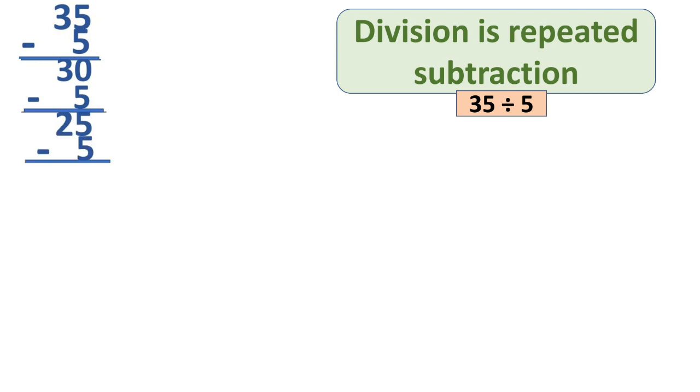Division is actually repeated subtraction. Let's see how we can divide 35 by 5. Let's minus 5 every time until we get 0 from the number 35. 35 minus 5 is equal to 30. Now, again, we will minus 5. We will minus the same number because we have to divide 35 by 5. 30 minus 5 is equal to 25. 25 minus 5 is equal to 20. 20 minus 5 is equal to 15. 15 minus 5 is equal to 10. 10 minus 5 is equal to 5. 5 minus 5 is equal to 0. If we get 0 at the end, it means we have divided number 35 equally. Let's see, how many times we subtracted number 5 from 35?